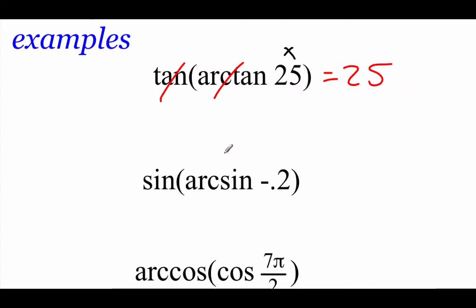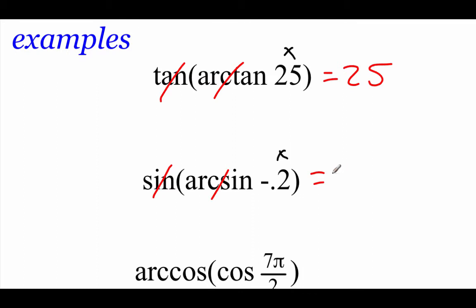Taking a look at our next one, it's very similar to that top one. We've got the sine of an arc sine of negative 0.2. Again, this represents an x value. And for these arcsines, we said the x values had to be between negative 1 and positive 1, so this fits in that interval. The sine cancels out with the arc sine, and we just get negative 0.2.